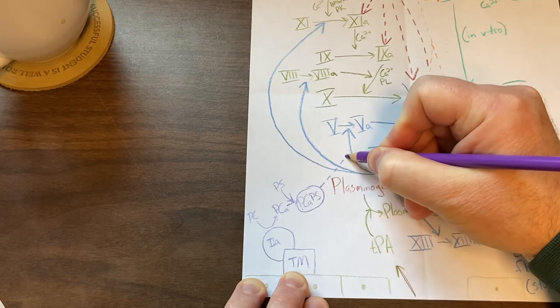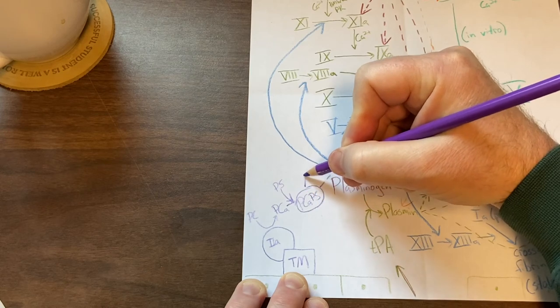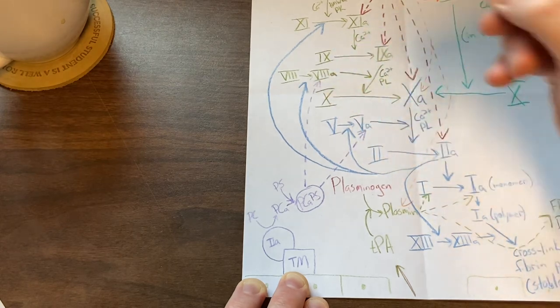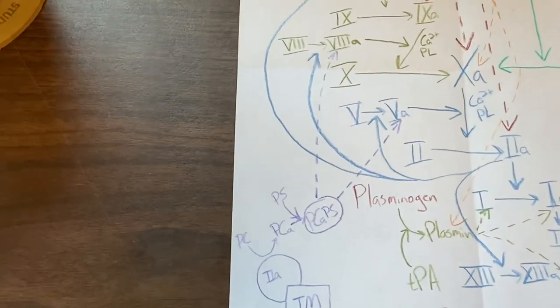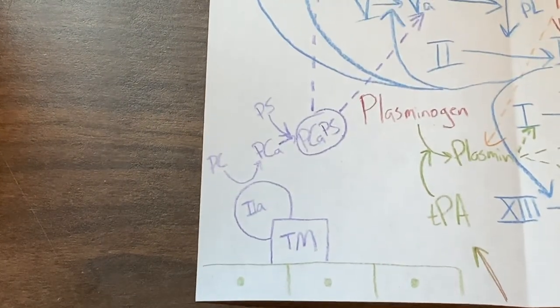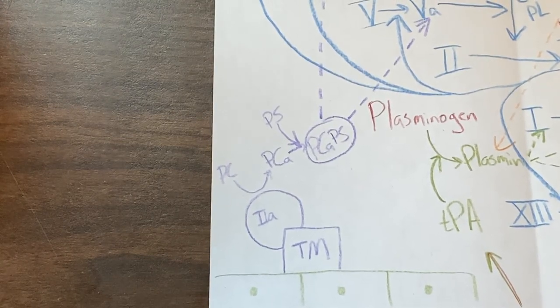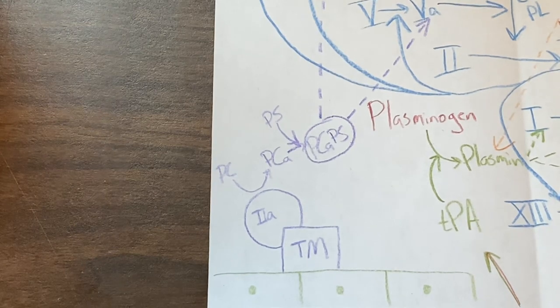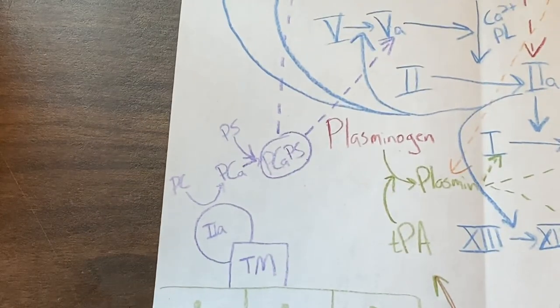That becomes the complex of activated protein C and protein S together. That is a big complex there and that inactivates five, so dashed line up to five, and it also inactivates eight. So I'll draw that line up to eight. If I zoom in here just a little bit so you can see that better, I drew it like this: protein C gets activated PCA by thrombomodulin and thrombin, then complexes with protein S, and they inactivate five and eight. So there you have it.